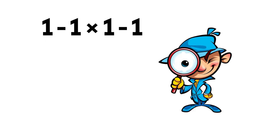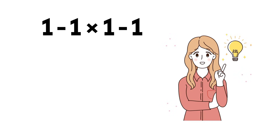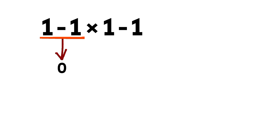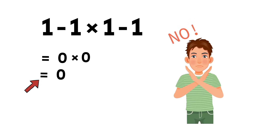Alright everyone, let's take a closer look at this expression: 1 minus 1 multiplied by 1 minus 1. At first, it might look very simple. You might quickly think 1 minus 1 is 0, and again 1 minus 1 is 0, so 0 multiplied by 0 equals 0. But that answer is actually not correct.